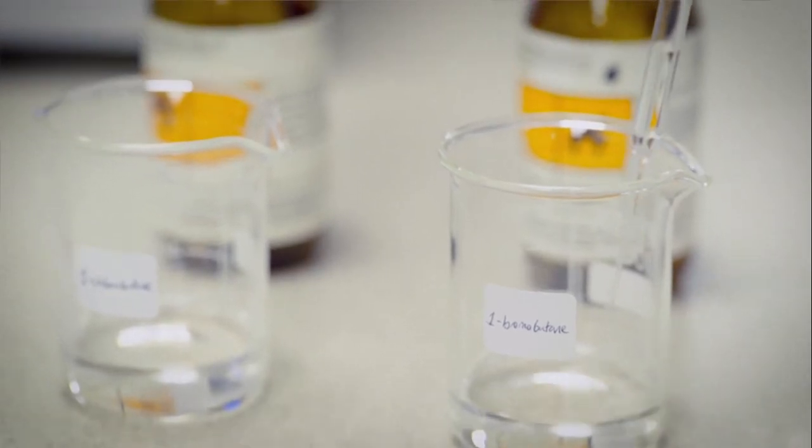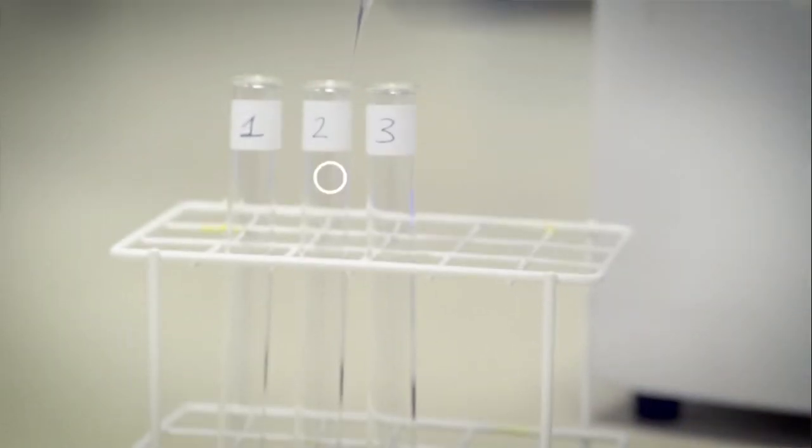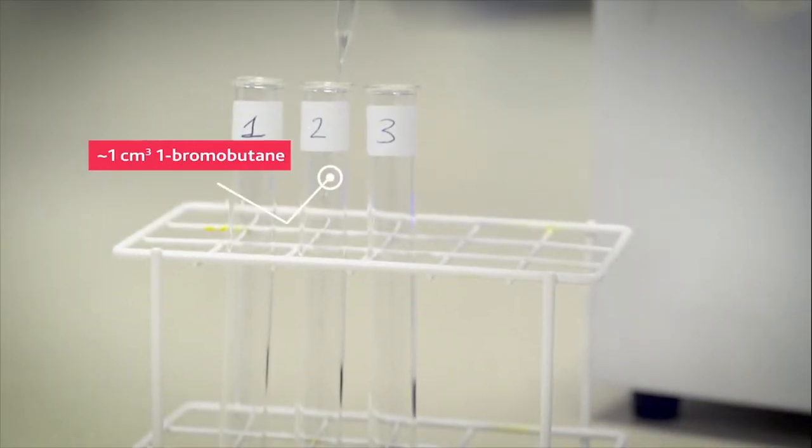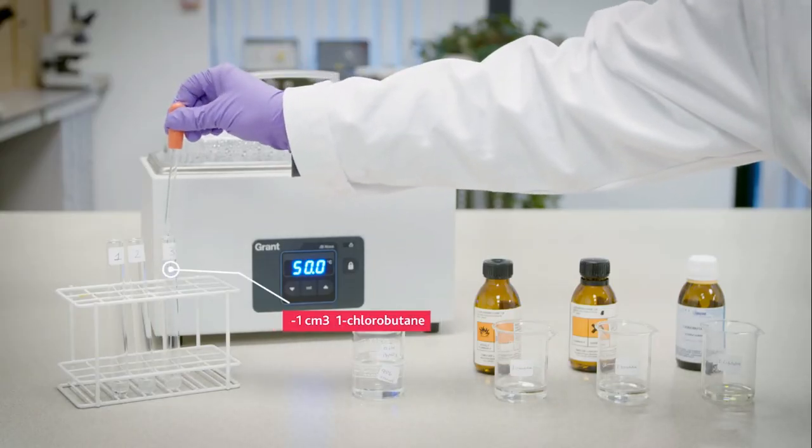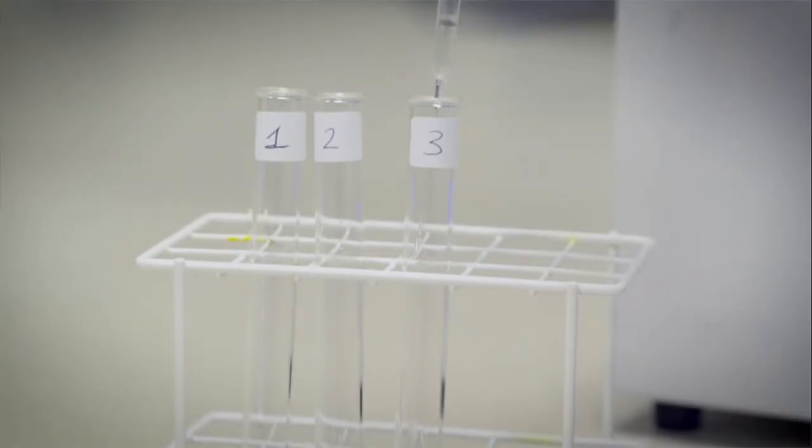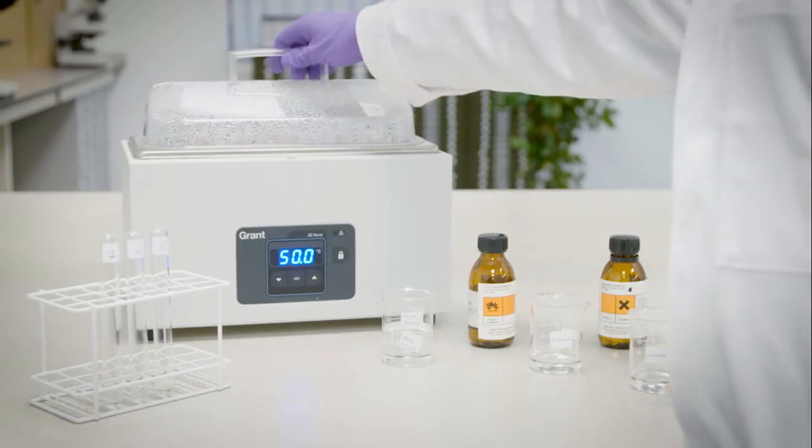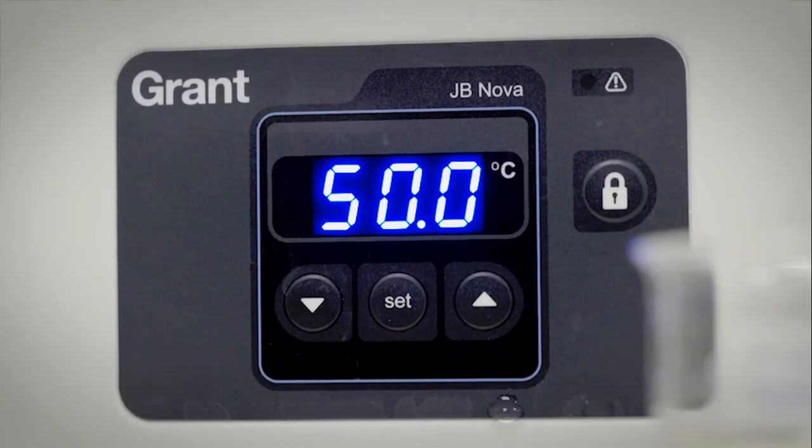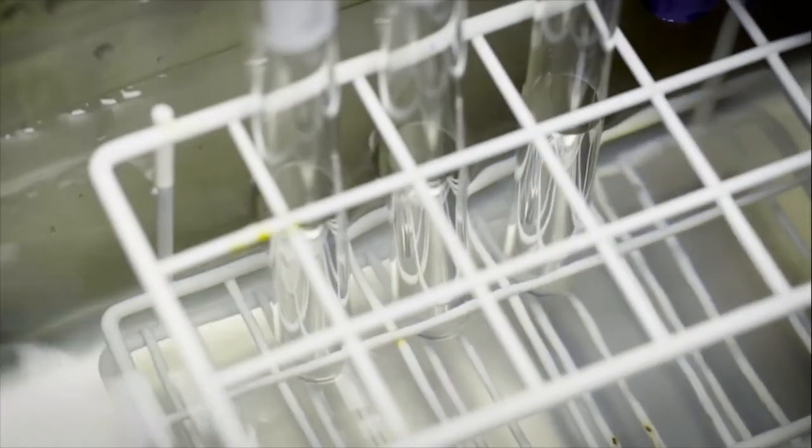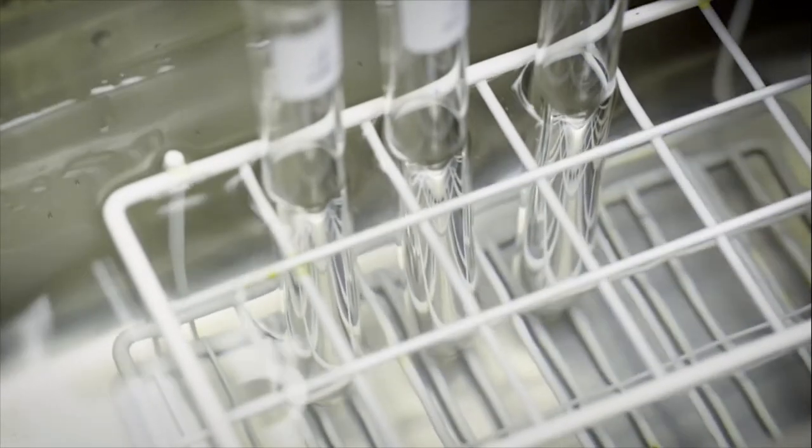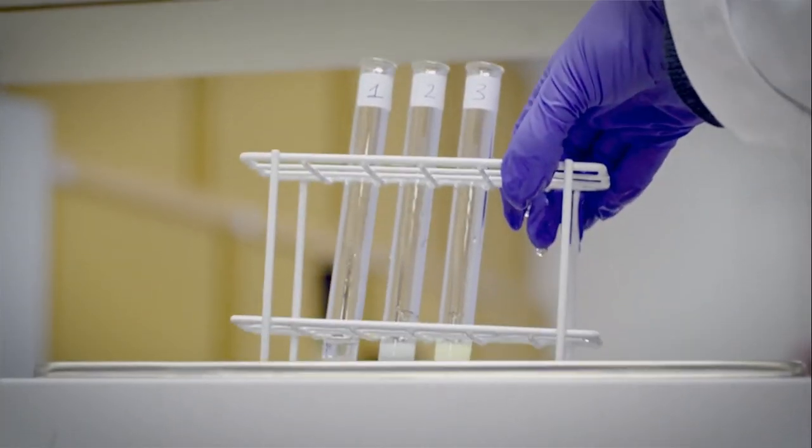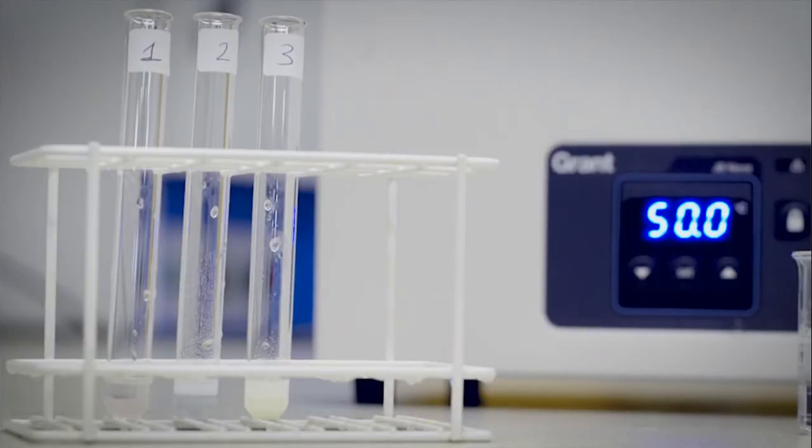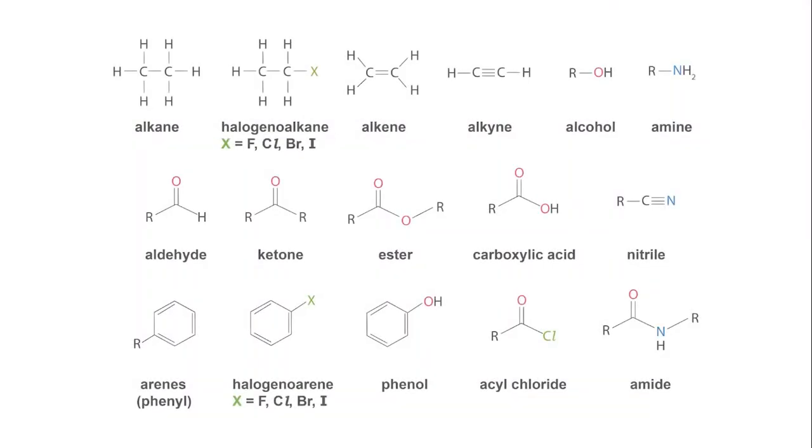One bromobutane is added to test tube 2. And one chlorobutane is added to test tube 3. The test tubes are then placed in a water bath set at 50 degrees Celsius. The contents of each test tube should begin to change. In a relatively short period of time, the precipitates observed in each test tube indicate the presence of a halogen atom.